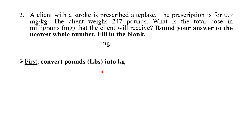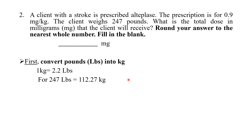First, we need to convert pounds to kg. 1 kg equals 2.2 pounds, so 1 pound equals 1 divided by 2.2 kg. Therefore, 247 pounds divided by 2.2 equals 112.27 kg.